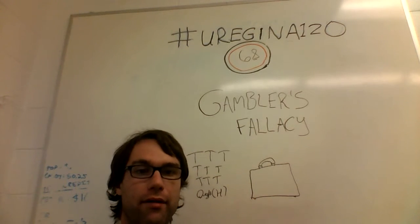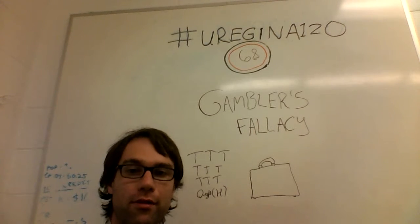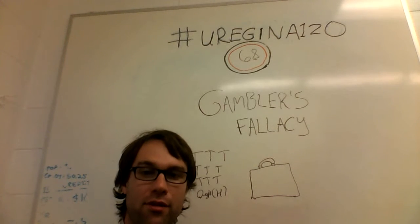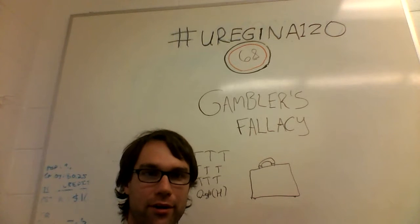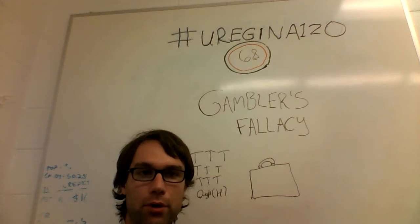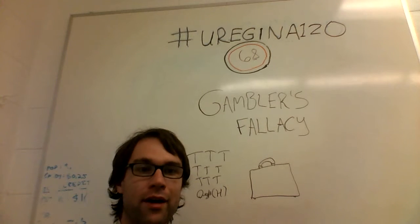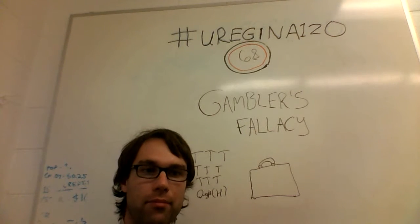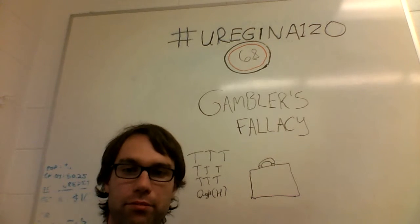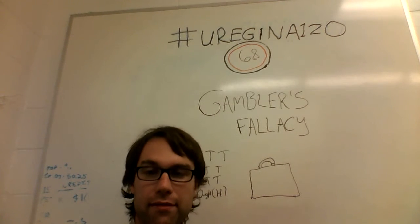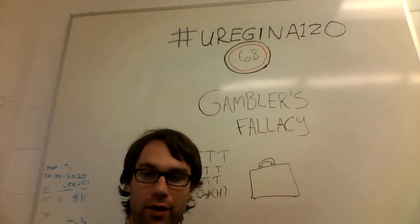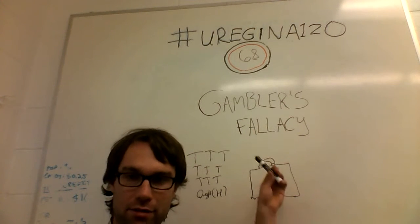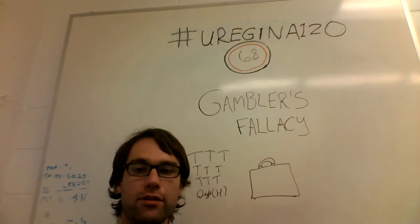Another example of where this comes into effect is people who think that because a certain number of people in their family, village, or community are having sons, it's their turn to have a daughter. And while there may be epigenetic factors involved, most of the time the decision of having a son or a daughter is a random process — it's roughly 50-50. There may be some choice involved, but there's strong evolutionary pressure keeping it independent of previous events. It would be committing this fallacy to believe otherwise.